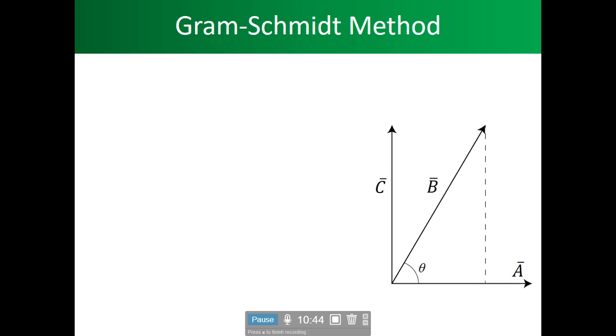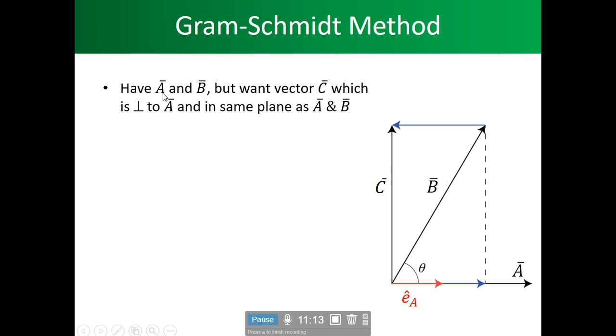Now we're looking at the Gram-Schmidt method. In this theory, we're looking here, we see that we have A, we have B, we have an angle in between them of theta, and then we have C, and we have B projected onto A. So when B is projected onto A, as you can see here, this says have A and B two vectors, but we want vector C, which is perpendicular to A. So as you can see, Y is perpendicular to X, and C is representing the Y, and A is representing the X, and is in the same plane as A, B. A, B is in the X, Y plane, there's no Z plane. So they're in the same plane.